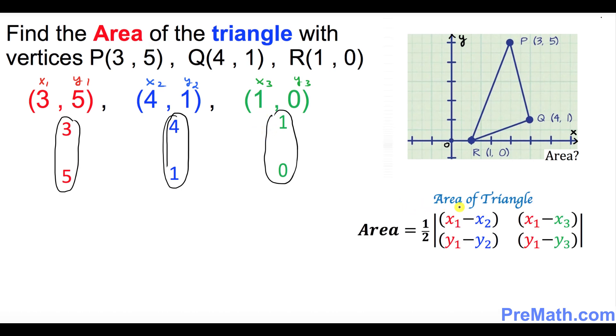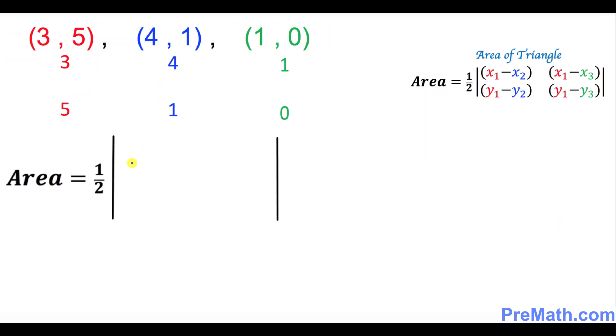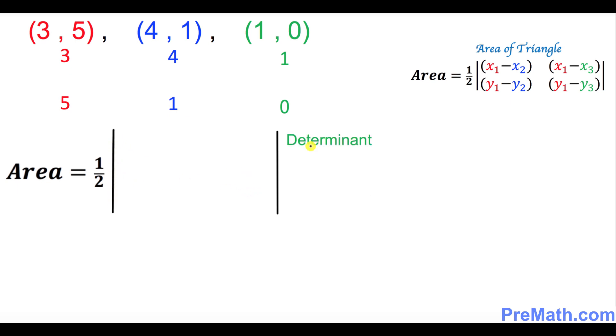And here's the formula that we will be using to calculate the area of the triangle. So finally let's go ahead and find the area of the triangle by simply filling out this box. By the way, this box that has these two vertical lines is called determinant.